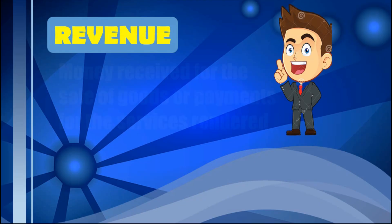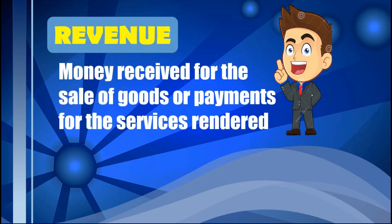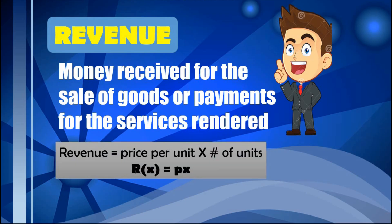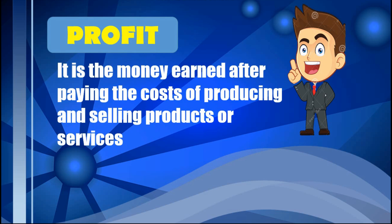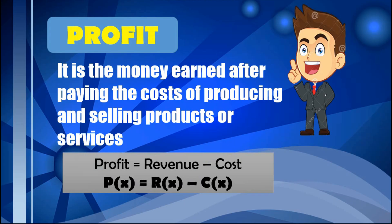Revenue is the money received for the sale of goods or payments for services rendered. Revenue is given by the price per unit times number of units, so R(x) = p × x. As for profit, it refers to the money earned after paying the cost of producing and selling products or services. It is the difference between revenue and cost: P(x) = R(x) − C(x).